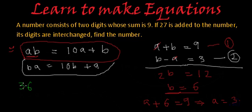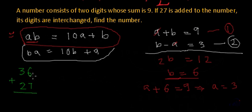And now let's check if we add 27 to this 36, what we get? 7 plus 6 is 13. 1 carried forward 1 plus 3 is 4 plus 2 is 6. Yes! If we add 27 to 36, the number becomes 63 which is actually the reversing of the digits. So the number was 36.